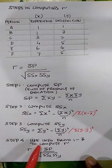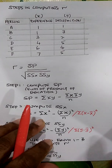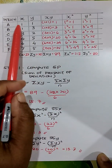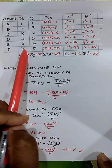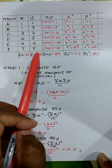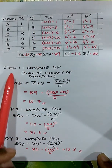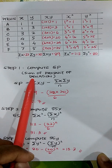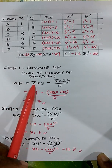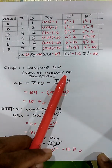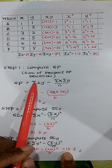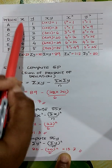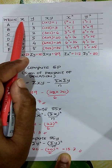Let's see how to do it. We have six individuals with their work experience scores (X) and their job satisfaction scores (Y). Step one: compute the sum of product deviation. For that you need sum of XY minus (sum of X times sum of Y) divided by n.